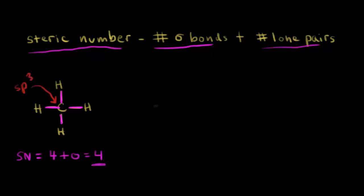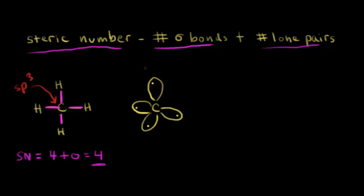In the last video, we also drew everything out. We drew in those four sp3 hybrid orbitals for that carbon, and we had one valence electron in each of those four sp3 hybrid orbitals. Hydrogen had one valence electron in an unhybridized s orbital. So we drew in our hydrogens, with one valence electron like that. This head-on overlap is of course a sigma bond.